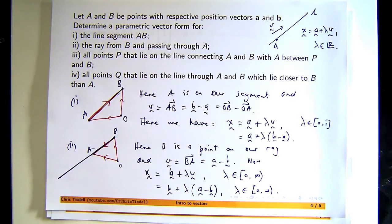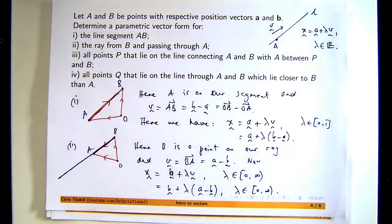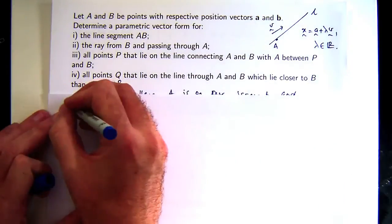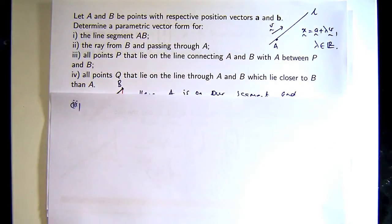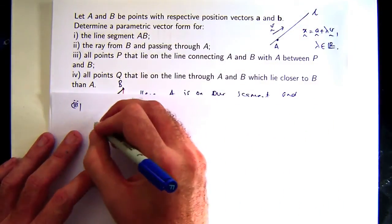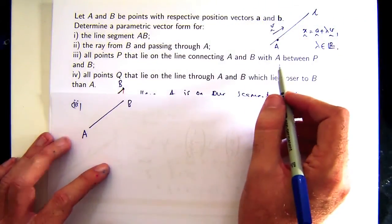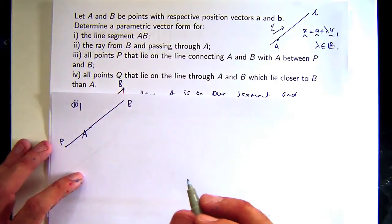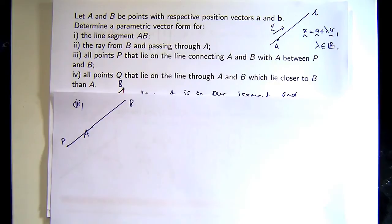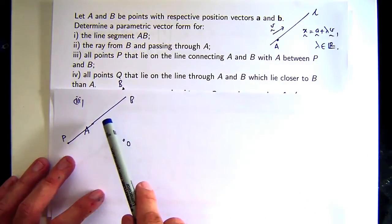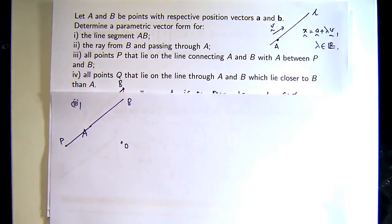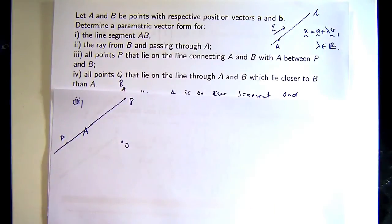It's getting a bit trickier now. We want to parametrize all points P that lie on the line connecting A and B with A between P and B. So this is part three now. So we want all points P that lie on that line connecting A and B. So let's just draw that in there. And we want A between P and B, so I'd better extend that a bit. If we draw in the origin again, then this can keep on going, of course, and it can also go on the other side as well. So we've got points on the line, we've got a vector parallel to the line.